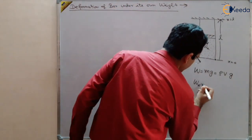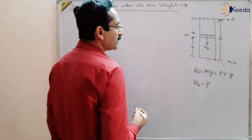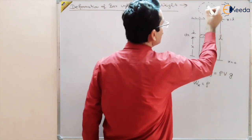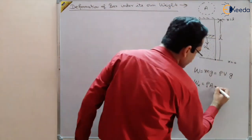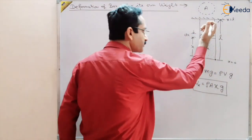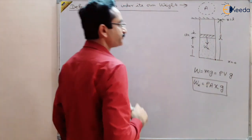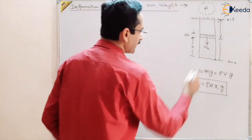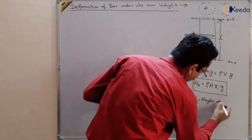So wx equals mass of this part multiplied by g, or density times volume times g. Suppose this body has area of cross section A (assuming circular cross section). So volume equals A times x, giving wx = ρ × A × x × g. This is the weight due to which the body pulls down and this dx elongates. wx is essentially the weight of the dotted part — the portion of length x below the element.